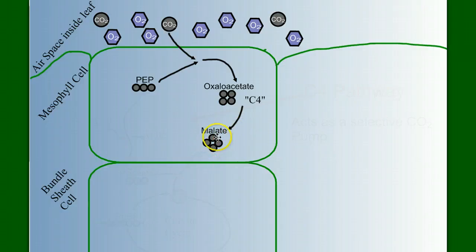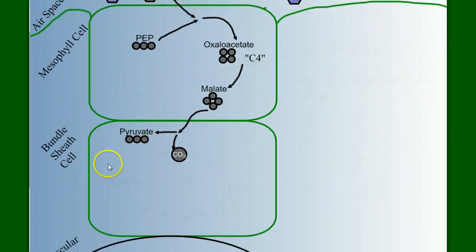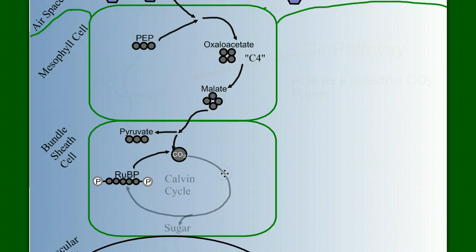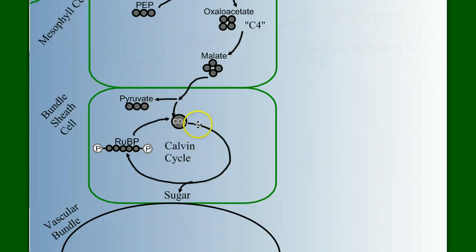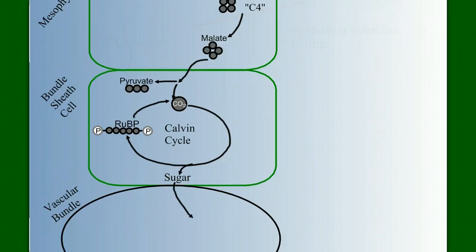And here's where things get interesting. This malate diffuses out of the chloroplast, out of the mesophyll cell, and into a bundle sheath cell. And when it does, it splits into a molecule of carbon dioxide and a molecule of pyruvate. And waiting right there to pick up that carbon dioxide is RuBP. And it binds to carbon dioxide, fixing it a second time, and kicks it right into the Calvin cycle that we learned in our last video. The Calvin cycle, of course, I left out the details here, is going to produce a sugar, or the precursor of sugar, which then diffuses in the vascular bundle and can get shipped to all parts of the plant.